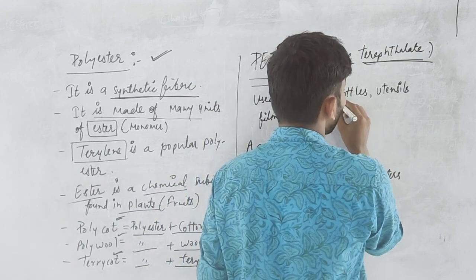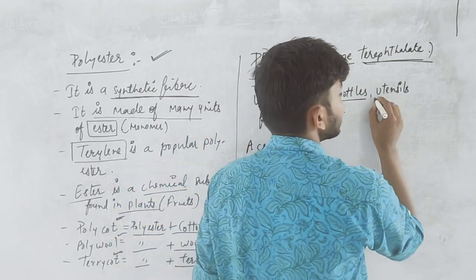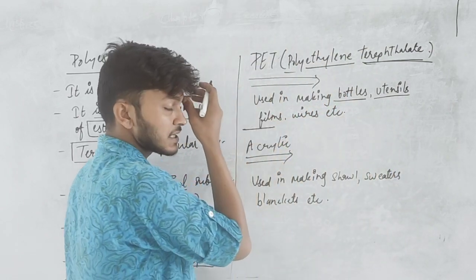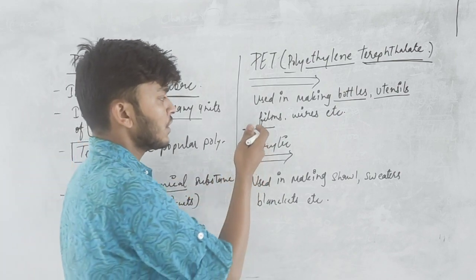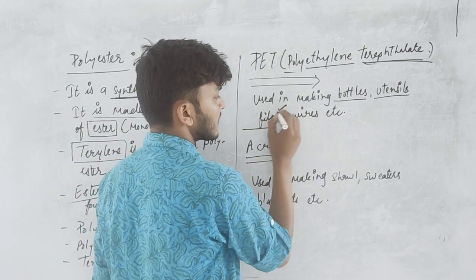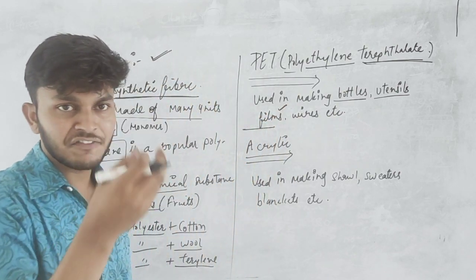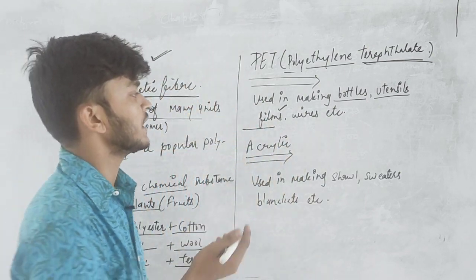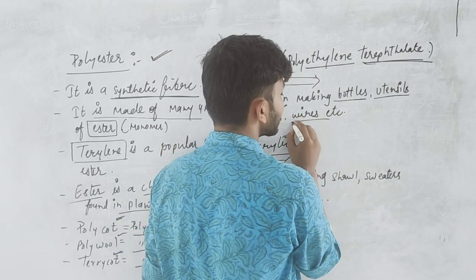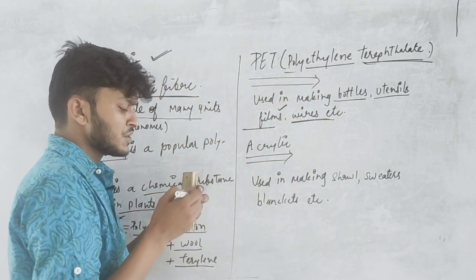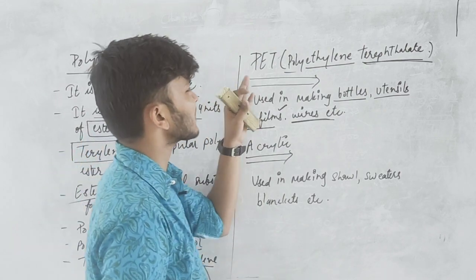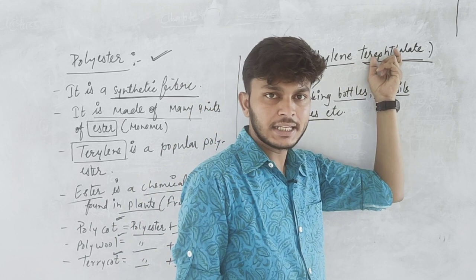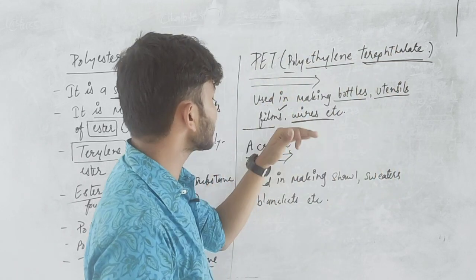PET is used in making bottles, utensils, films, wires etc. That is the full form.